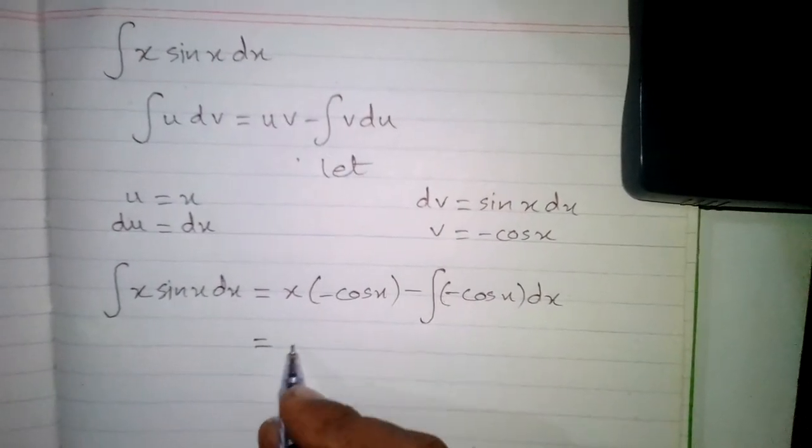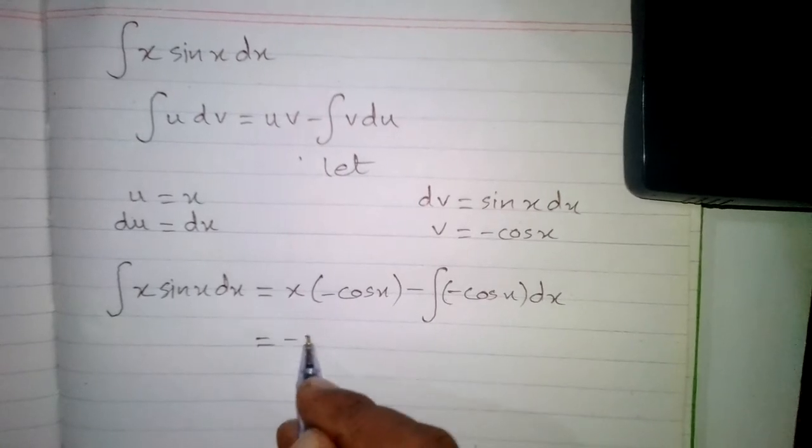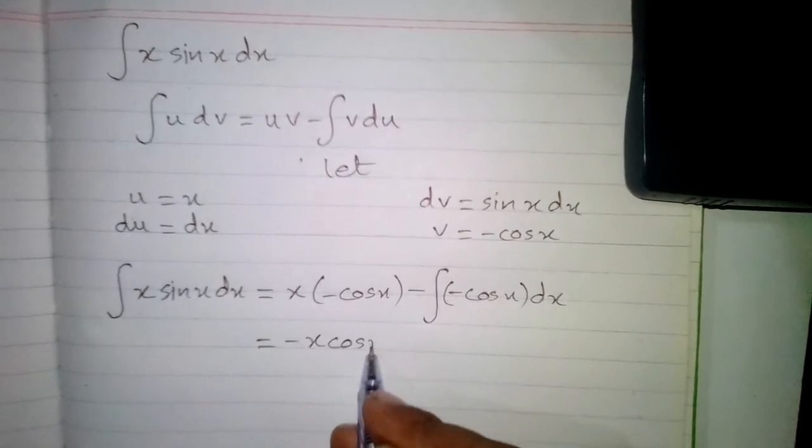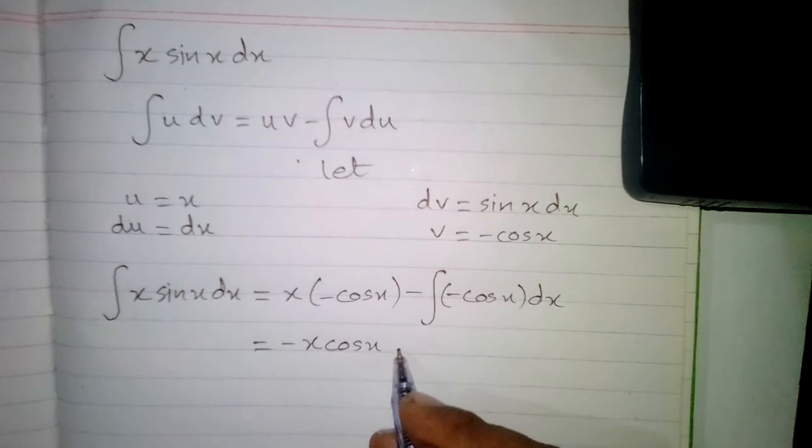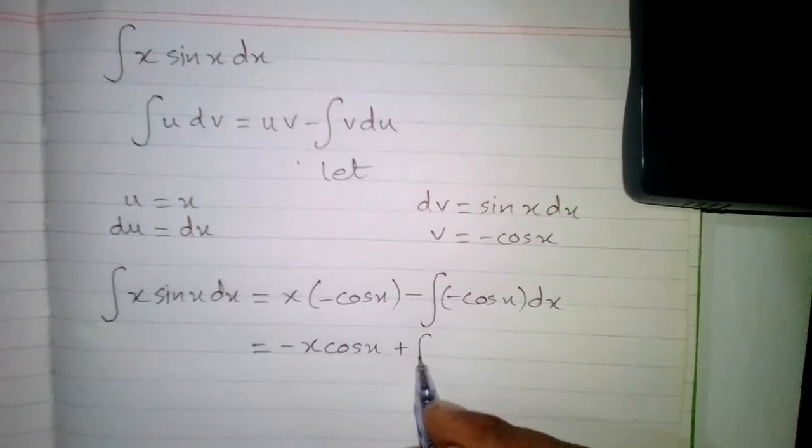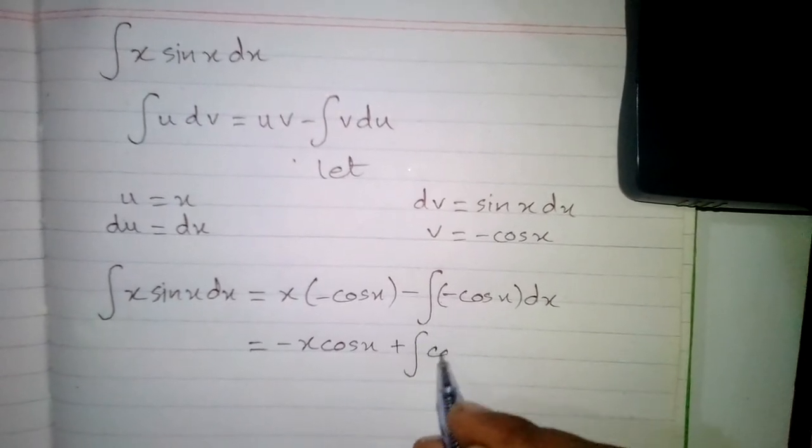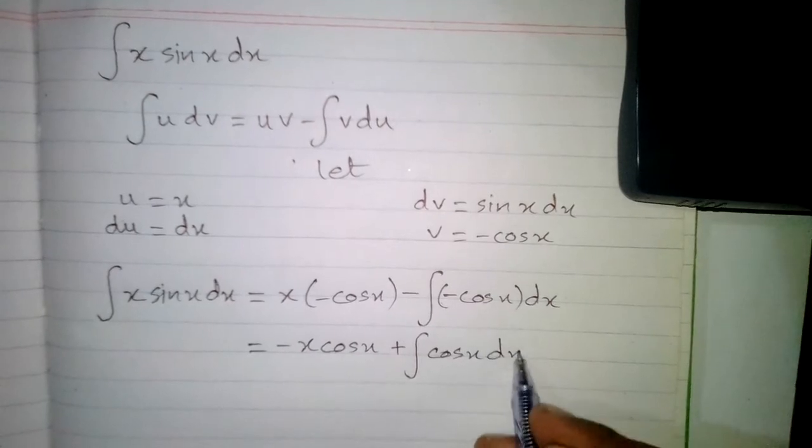Then we will simplify this. We will get minus x cos x, then this minus minus will become plus integral of cos x dx.